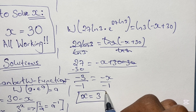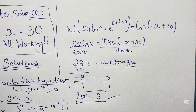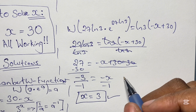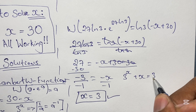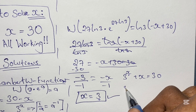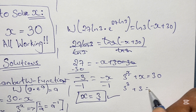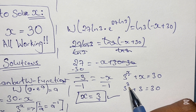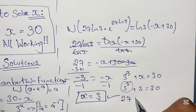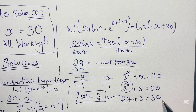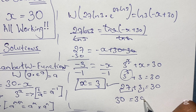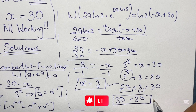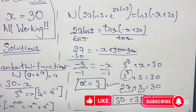We knew from the very beginning that x equals 3, but knowing how to show the working is essential. Using our original equation 3 to the power of x plus x equals 30: plugging in x equals 3 gives 3 to the power of 3 plus 3 equals 30. We know 3 to the power of 3 is 27, so 27 plus 3 equals 30, which confirms our answer. Thanks again for staying tuned in this math lesson and I hope to see you in the next video.